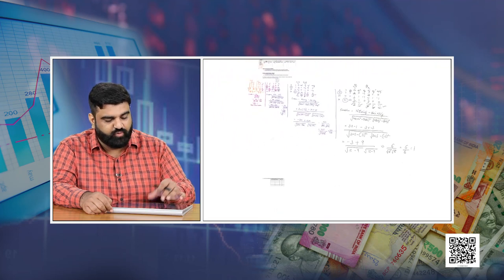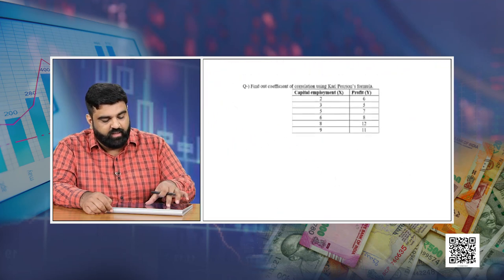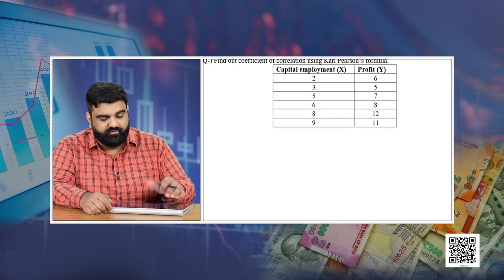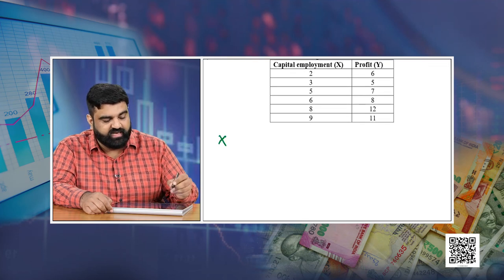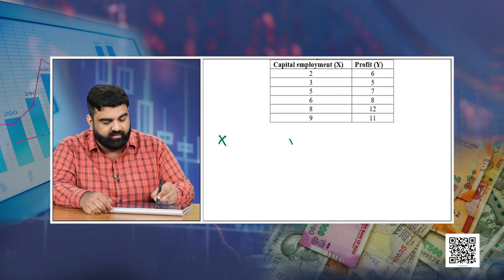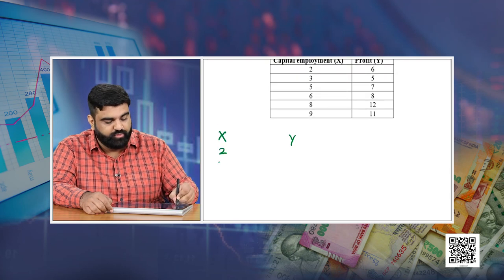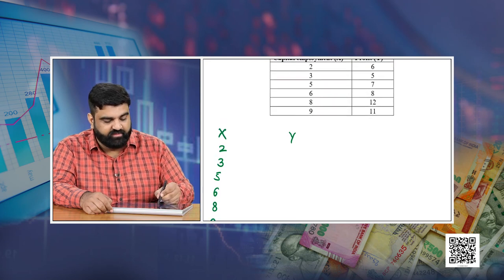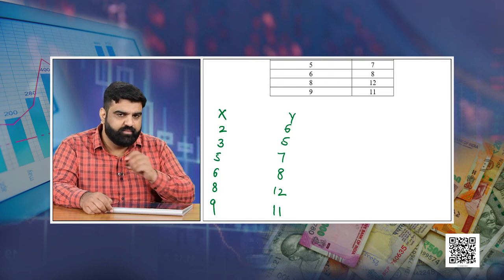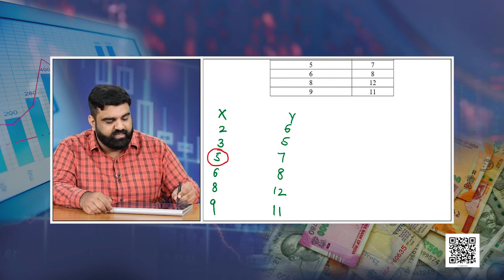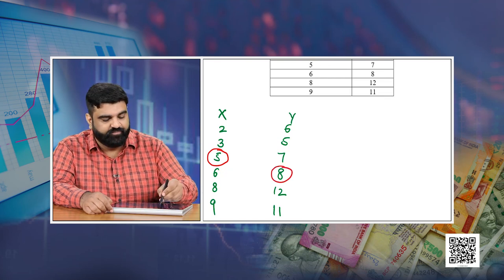Now let us move to the next question, which I will solve using the assumed mean method. We have capital employed as x and profit as y. The x values are 2, 3, 5, 6, 8, and 9, and the y values are 6, 5, 7, 8, 12, and 11. I am assuming 5 to be the assumed mean for the x series and 8 to be the assumed mean for the y series. Calculating dx as x minus 5 gives minus 3, minus 2, 0, 1, 3, and 4, totalling 3.